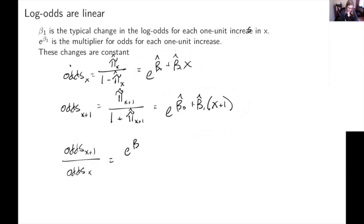So I'm going to say that's e to the beta 0 hat plus beta 1 hat X plus one over e to the beta 0 plus beta 1 hat of X.